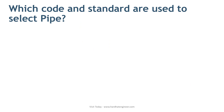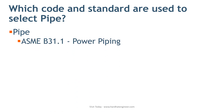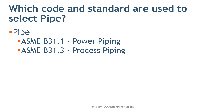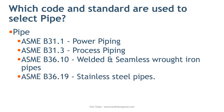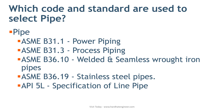Which codes and standards are used to select pipe? Different standards are used for different piping components. Selection of pipe material is done based on the piping design code such as ASME B31.1 for power piping and ASME B31.3 for process piping. Dimensions of carbon steel and stainless steel pipes are given in ASME B36.10, which covers welded and seamless wrought iron pipe, and ASME B36.19, which covers stainless steel pipes. API 5L pipe specification is also used in the petroleum industry for dimensions of carbon steel pipe.